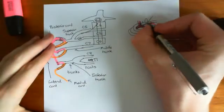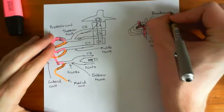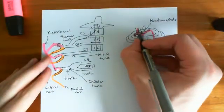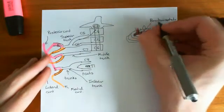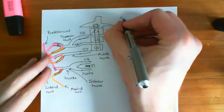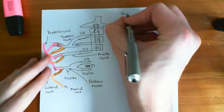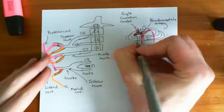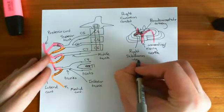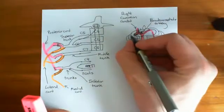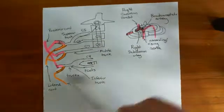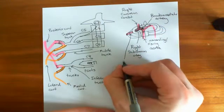The brachiocephalic artery quickly divides into two pieces: the common carotid artery on the right side, and the right subclavian artery. The brachiocephalic artery is that thick trunk which splits into two major ones - one supplying the head and one supplying the upper limb. The right subclavian artery goes underneath the first rib. As soon as it gets under the first rib, it changes its name - it is now known as the right axillary artery.